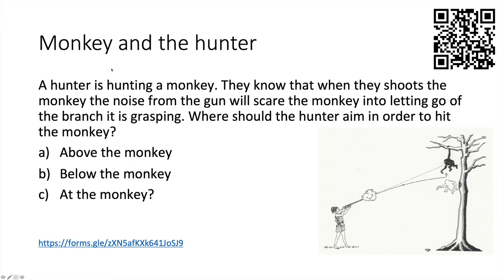A fun problem: the monkey and the hunter. A hunter knows that shooting will cause a monkey to let go of its branch. Where should the hunter aim — above, below, or at the monkey? The answer is at the monkey: the bullet drops at the same rate as the monkey falls. If initially aligned, both fall at the same rate and the bullet hits the monkey.